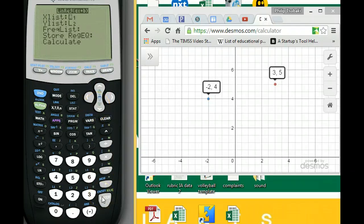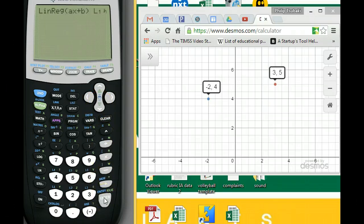List one is the x list, list two is the y list. And then we go down to calculate. And it gives us the function y equals 0.2x plus 4.4.